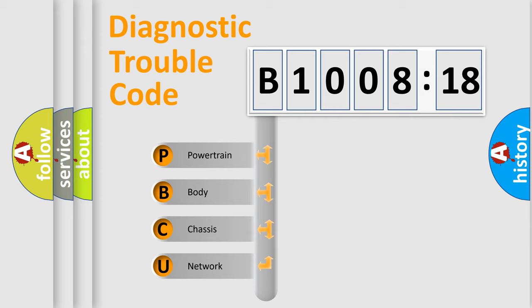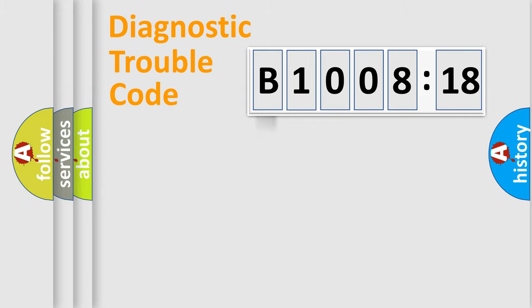We divide the electric system of automobile into four basic units: Powertrain, Body, Chassis, and Network. This distribution is defined in the first character code.